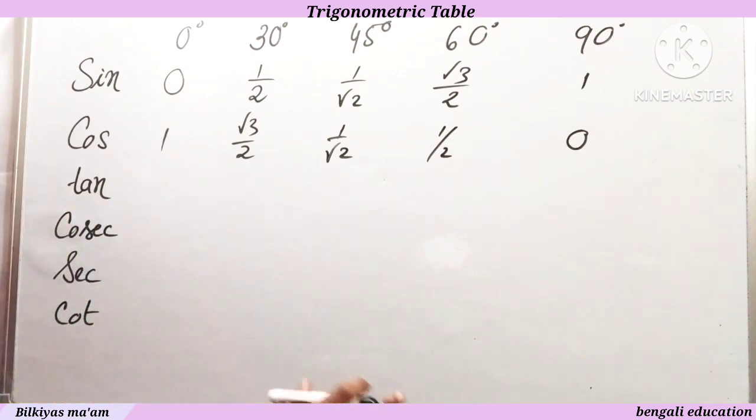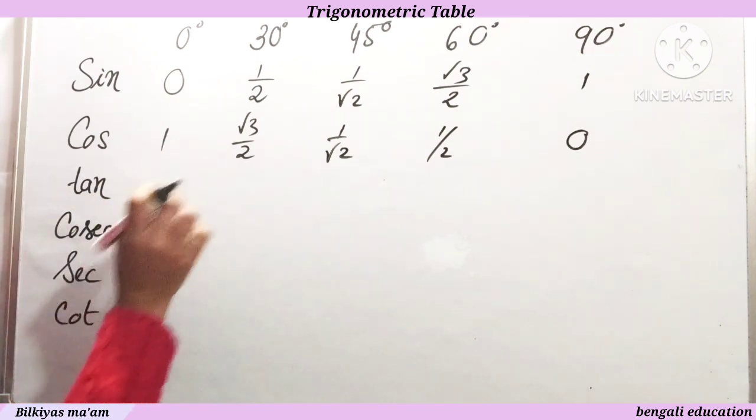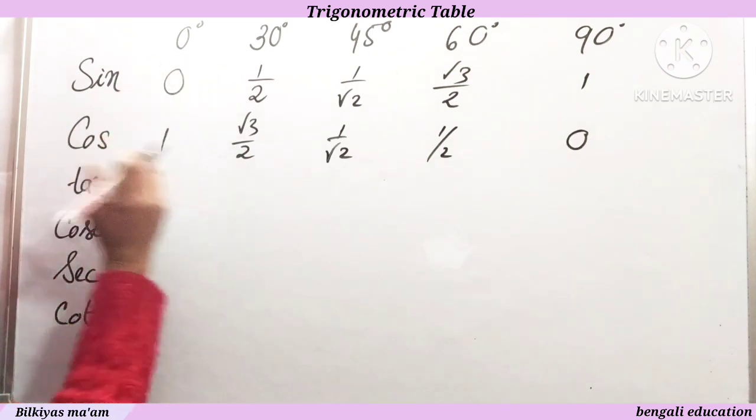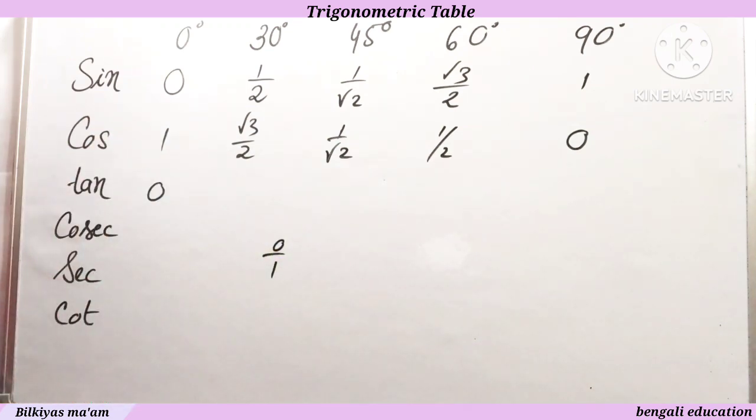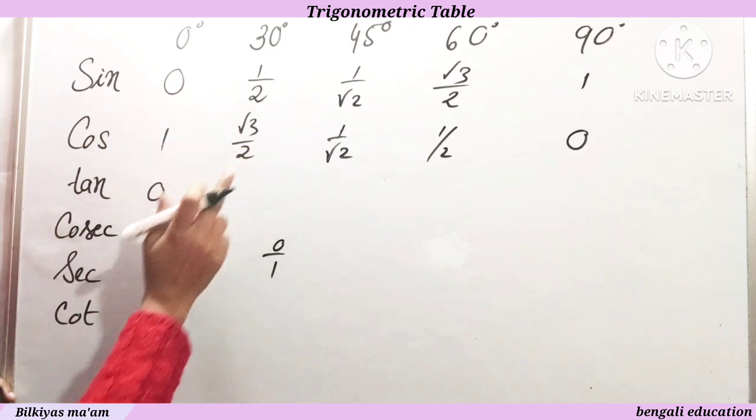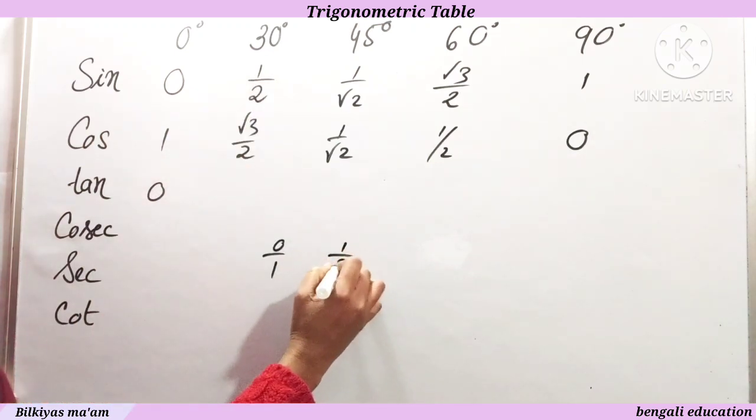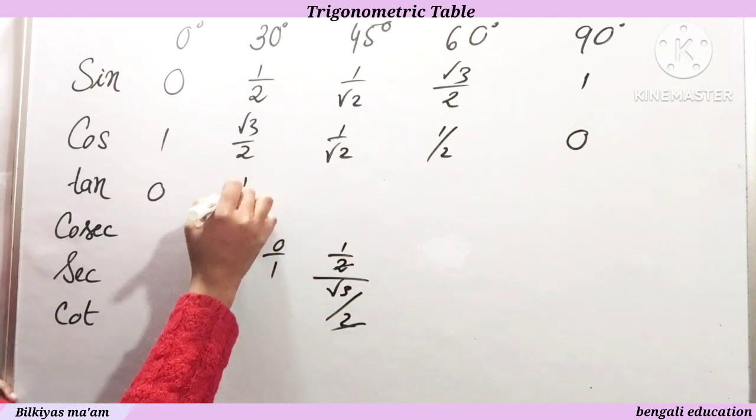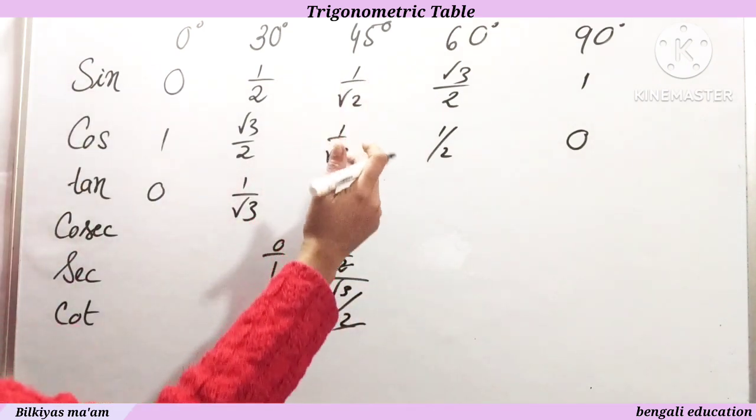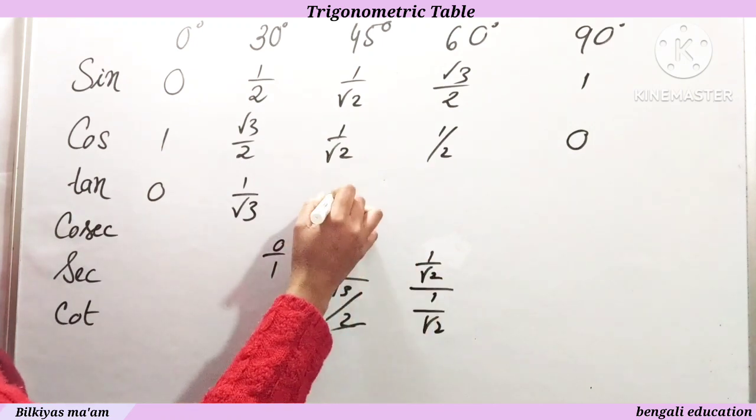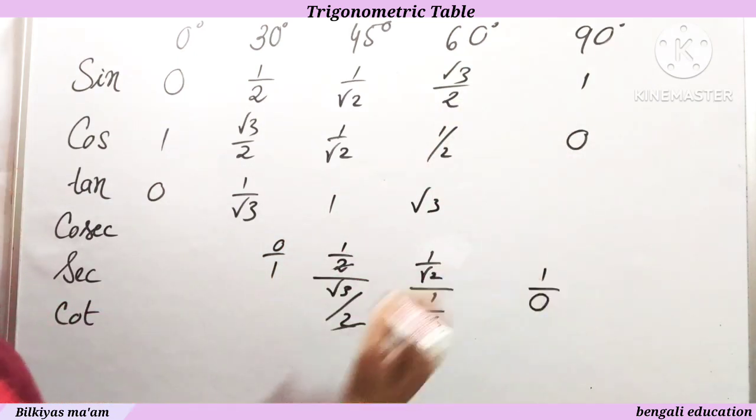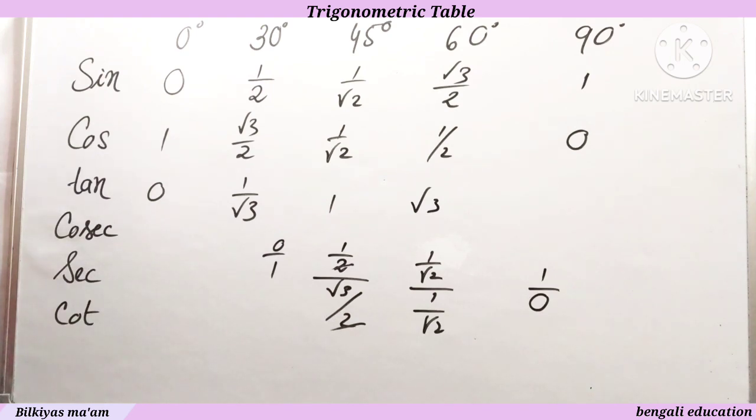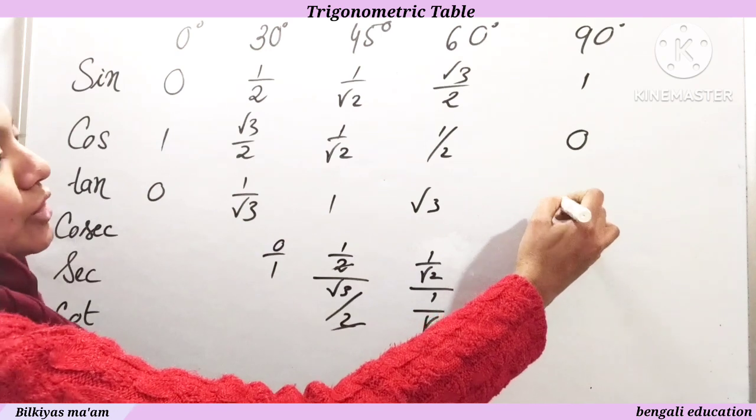Tan, the value is equal to sin theta upon cos theta. So the tan value is sin upon cos. So you can see 0 by 1 is 0. Then half upon root 3 by 2 gives 1 upon root 3. Tan 45 is 1 upon root 2 over 1 upon root 2, which is 1. Then root 3 by 2 upon half is root 3. And 1 upon 0 is not defined, so tan 90 is not defined.